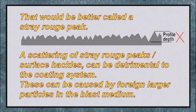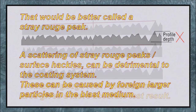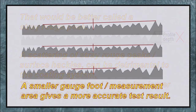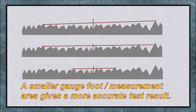Readings like that need to be excluded from the set of readings taken. A scattering of stray rogue peaks — surface hackles — can be detrimental to the coating system. This can be caused by foreign, larger particles in the blast medium. A smaller gauge foot measurement area gives a more accurate test result.